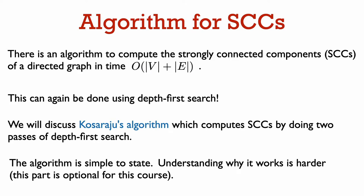Now let's talk about an algorithm to identify the strongly connected components of a directed graph. We are going to talk about an algorithm of Kosaraju that can do this in just two passes of depth-first search, so the running time is going to be of order the number of vertices plus the number of edges. The algorithm is quite simple to state, but it takes some effort to see why it works. We're just going to go over the argument that it works at a high level, and this explanation will be an optional part of the course.